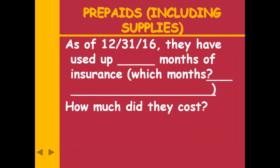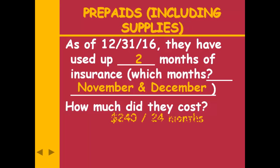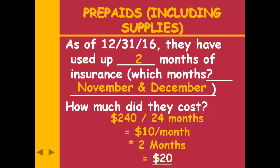December 31st rolls around. Have I used up any of that policy? Two months: November and December. Count on your fingers — that's how you get it right. The policy was $240 for 24 months, so $10 per month. I've used up two months: 2 times $10 equals $20 of insurance used up. That $20 is what we make the adjusting entry for.